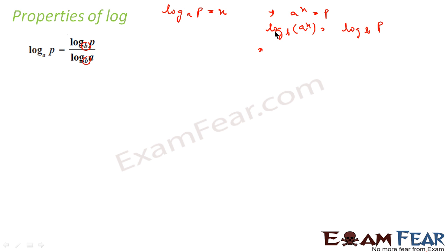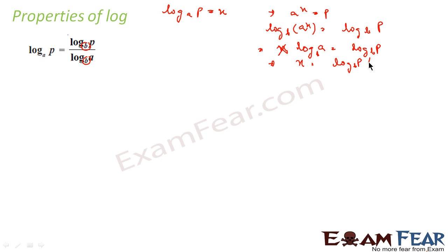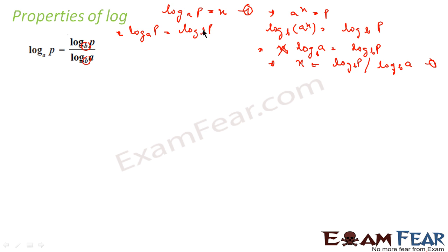This simplifies because log a to the power n is nothing but n log a. So this becomes x times log a to the base b equals log p to the base b. Solving further, x is nothing but log p to the base b divided by log a to the base b. So comparing, log p to the base a equals log p divided by log a with the new base.